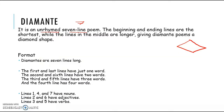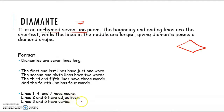The format of Diamante is 7 lines long. The first and last line have just one word. The second and sixth lines have two words. The third and fifth lines have three words. And the fourth line has four words. Line one, four, and seven have nouns. The second and sixth lines have adjectives. Meanwhile, lines three and five have verbs.